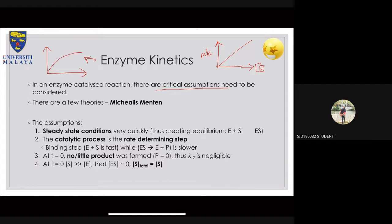Instead, you get a curve where initially the rate starts very quickly — very steep — and at one point the enzyme gets saturated and the rate of reaction is maintained with no further change. The initial rate is very steep, making it very hard to determine the actual rate of reaction. As the reaction progresses, the substrate concentration gets lower and you have a maximized number of enzyme-substrate complexes.